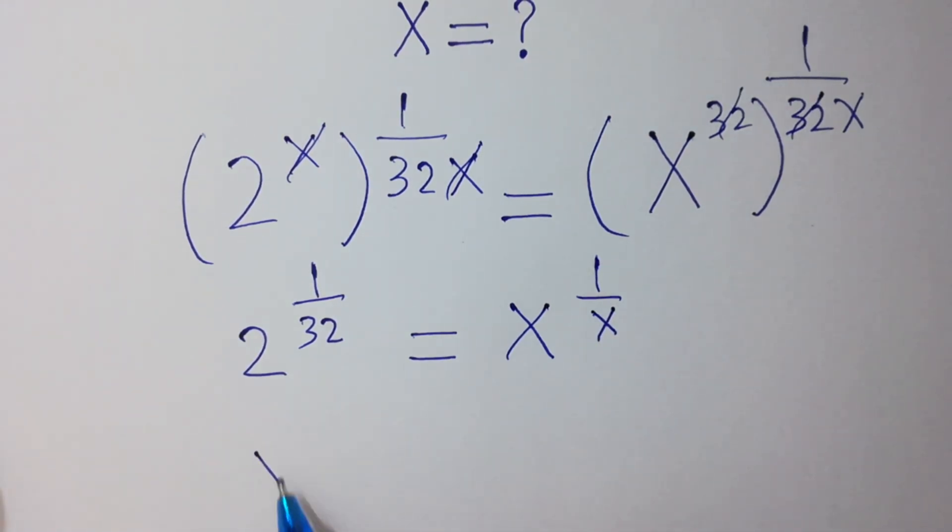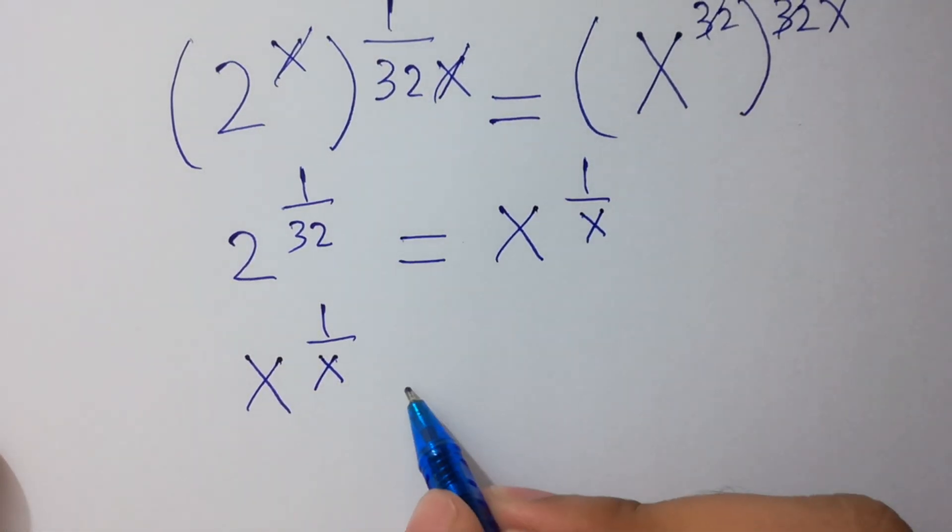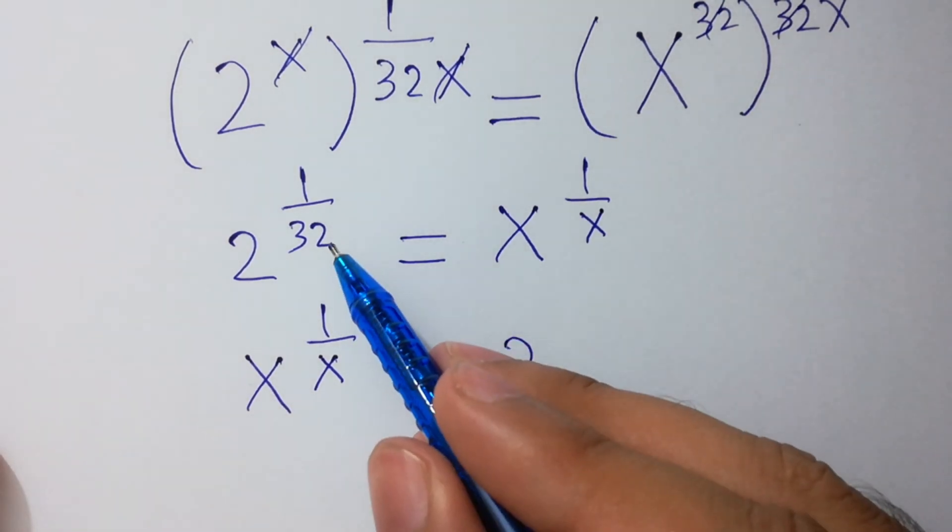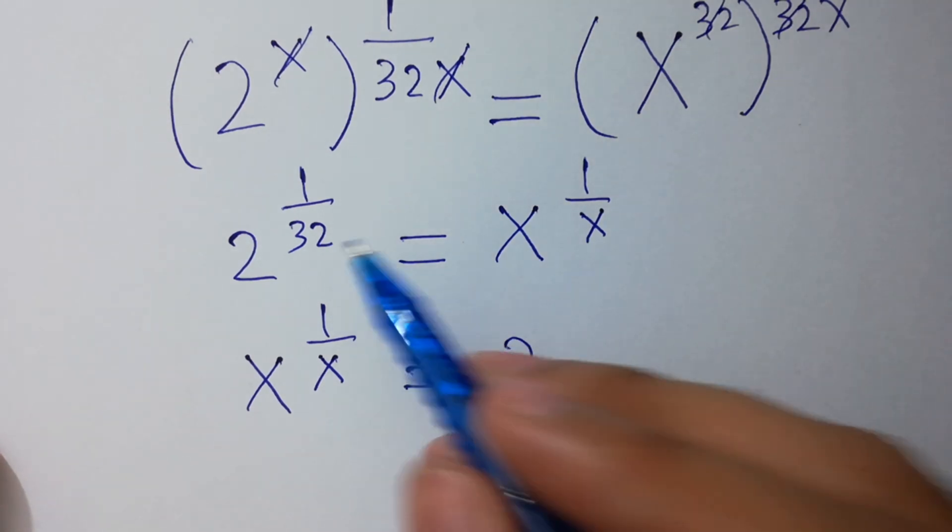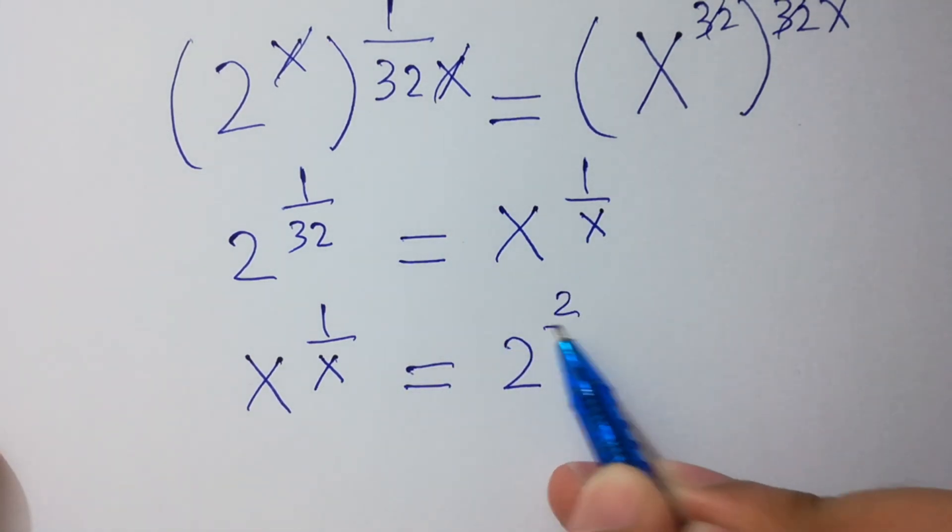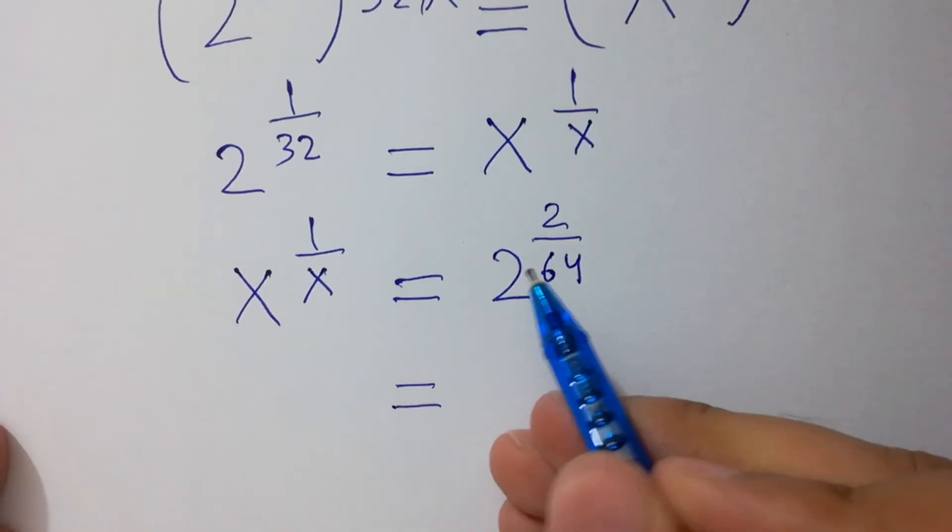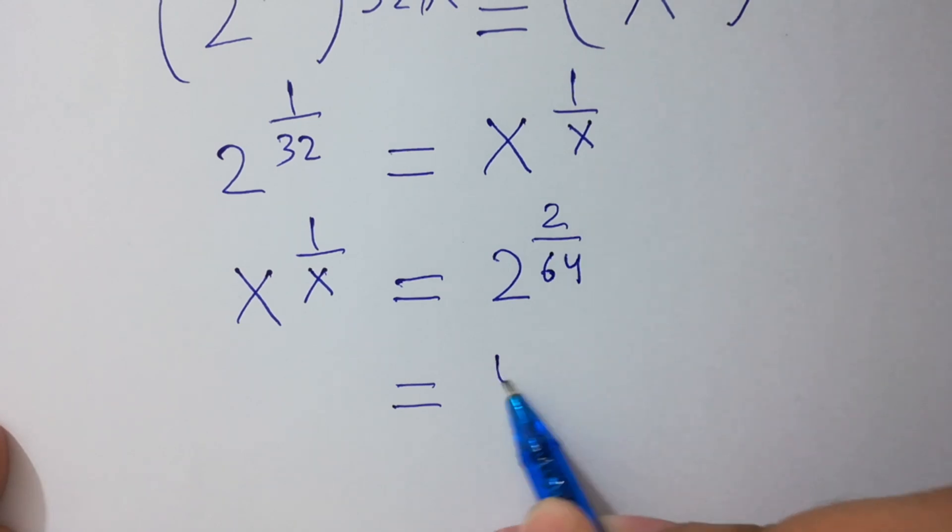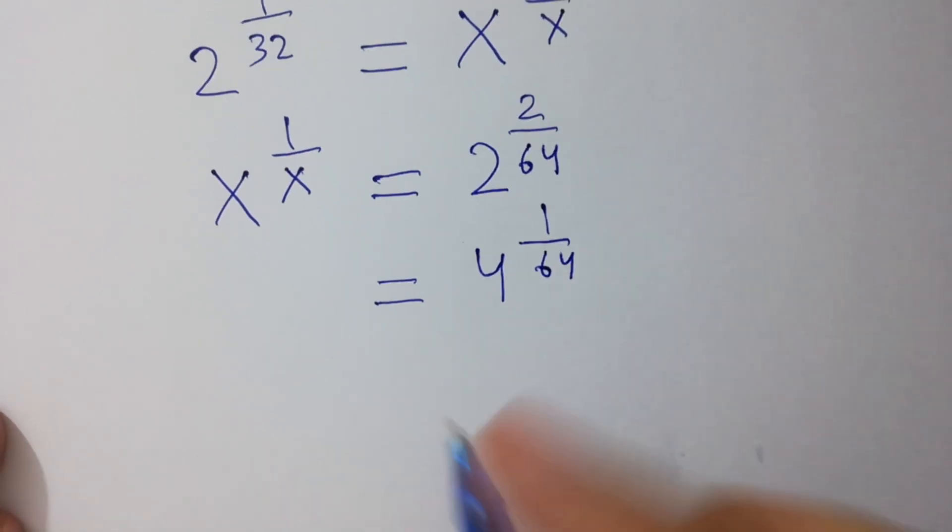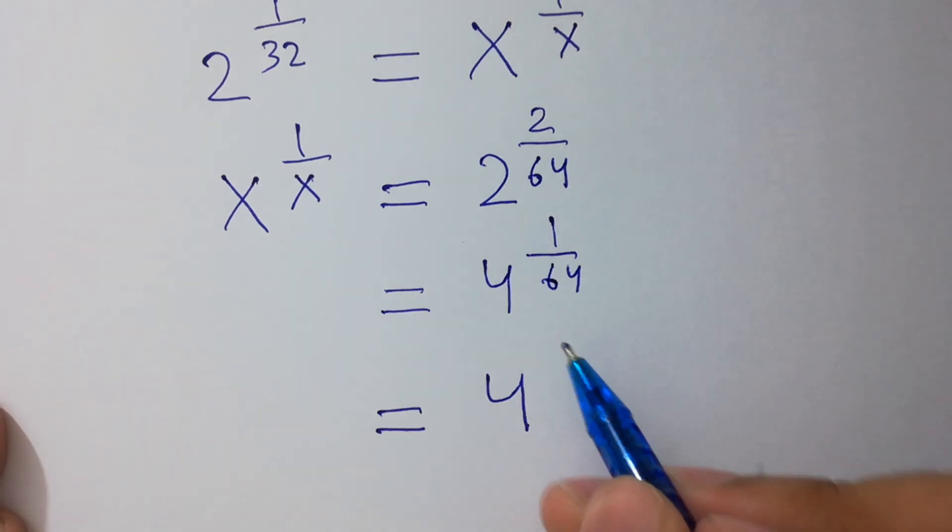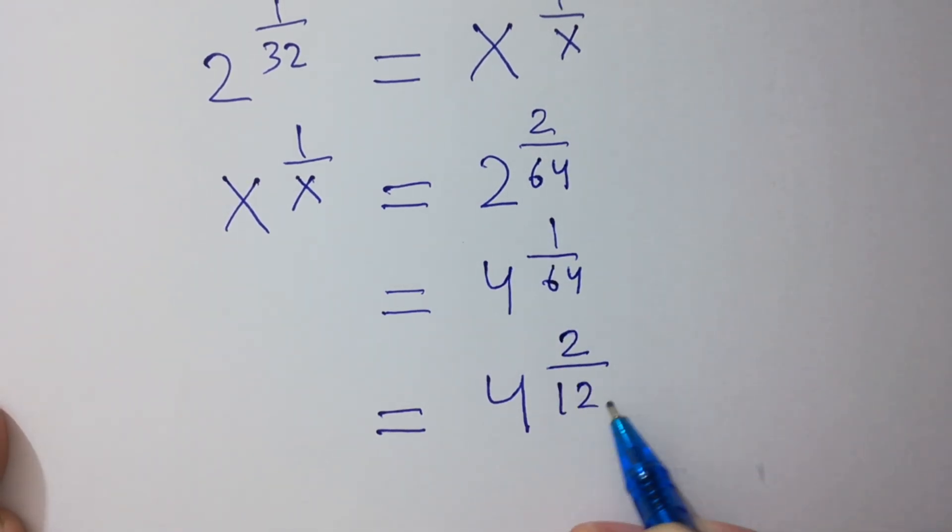Let's take x to the power 1 over x on left hand side and 2 to the power 1 over 32 on right hand side. 1 over 32 can be written as 2 over 64. So here 2 squared equals to 4 to the power 1 over 64, and 1 over 64 can be written as 2 over 128.